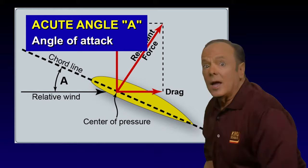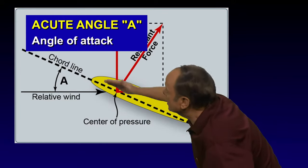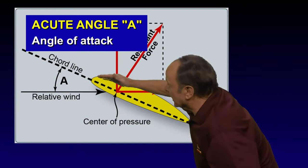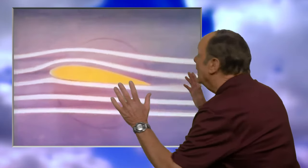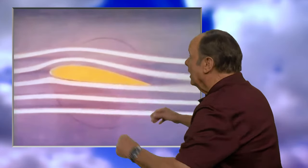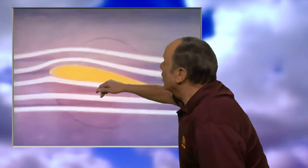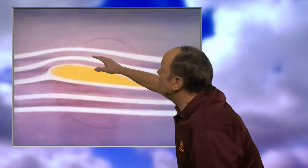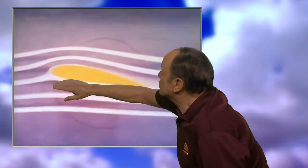The angle of attack determines how much lift there will be on a wing. Here is an airplane wing in a wind tunnel with smoke going smoothly over it. When the air flows smoothly over the wing, it's called laminar flow.